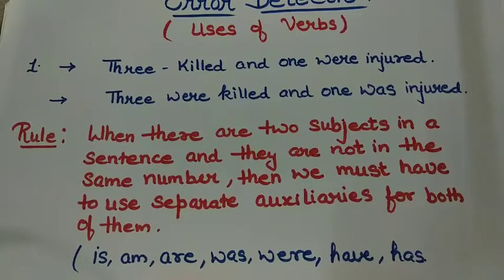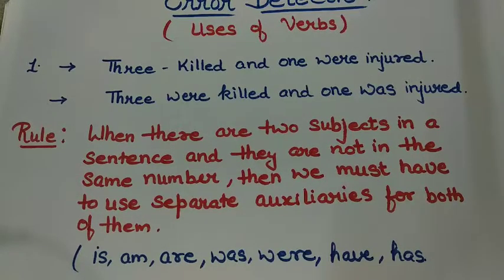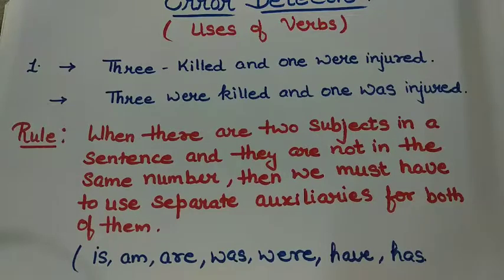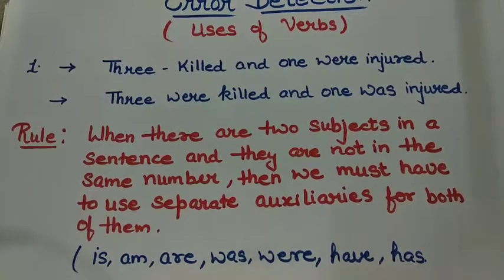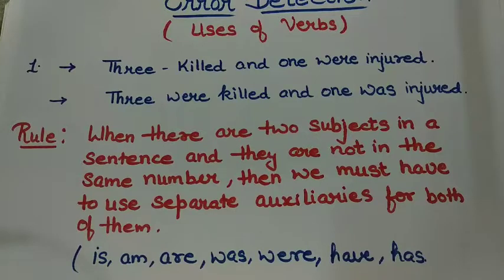Here is the first rule of today's class. I have written two sentences here — one of them is correct and one is incorrect. We have to check which one is correct and how the other one is incorrect. We will consider both sentences, the correct one as well as the incorrect one, because if you know the correction you should also know what the incorrect part is and how the question can come in the exam. The first sentence says: 'Three killed and one were injured.'